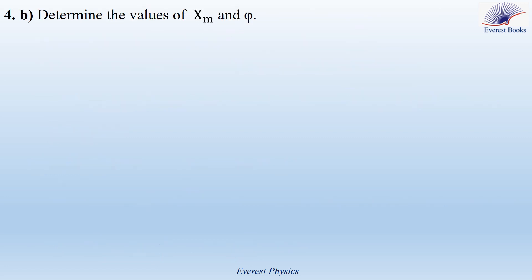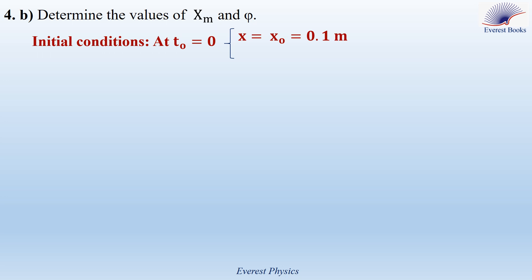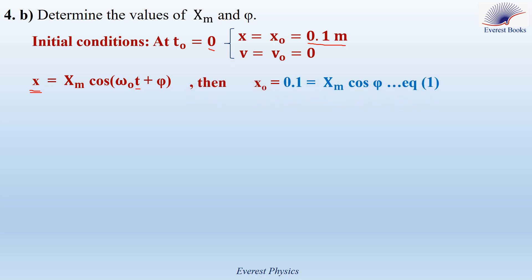Now let's move to Part 4B: determine the values of xm and φ. The values of xm and φ are determined from the initial conditions x₀ and v₀. At t₀ equals 0, x equals x₀ which is 0.1 meters, and v₀ equals 0. The time equation is x equals xm cosine(ω₀t + φ). Substituting x equals 0.1 meters and t equals 0, we get 0.1 equals xm cosine(φ). This is equation 1, with xm and cosine(φ) both unknown.